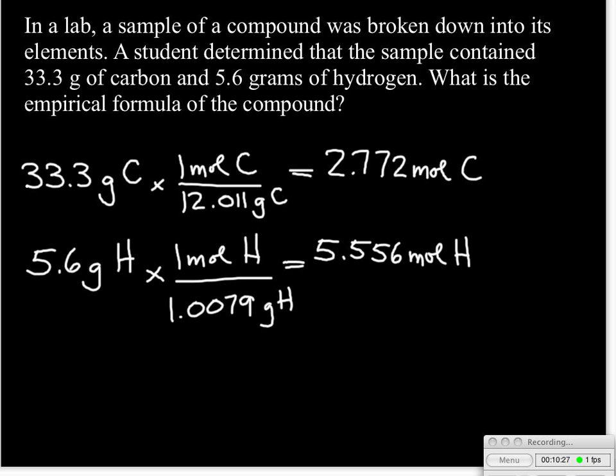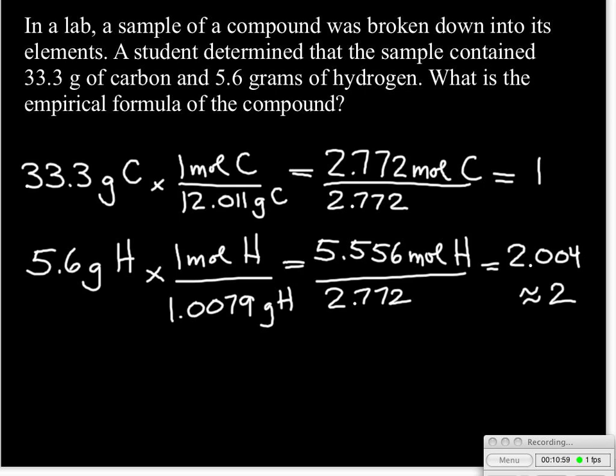Now what we need to do is divide by small. We're going to divide both of them by the 2.772. We find that we have a 1 to 2.004 ratio, and that number there is close enough to round. If that was close to 0.33 or 0.5, we would have to multiply everything. But 2.004 for an empirical formula, one that's done from experiment, that's close enough to 2. So we can just round that to 2, and now we have a formula of CH2.